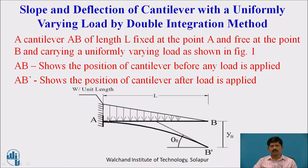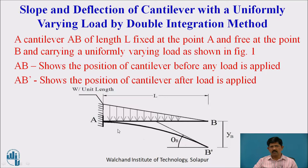We will consider a beam fixed at end A and free at the other end, with a uniformly varying load. It has intensity 0 at point B (the free end) and maximum load W per unit length at point A. Due to this load, there is deflection; AB' shows the deflected shape of the beam. YB is the deflection and θB is the slope which we have to find.